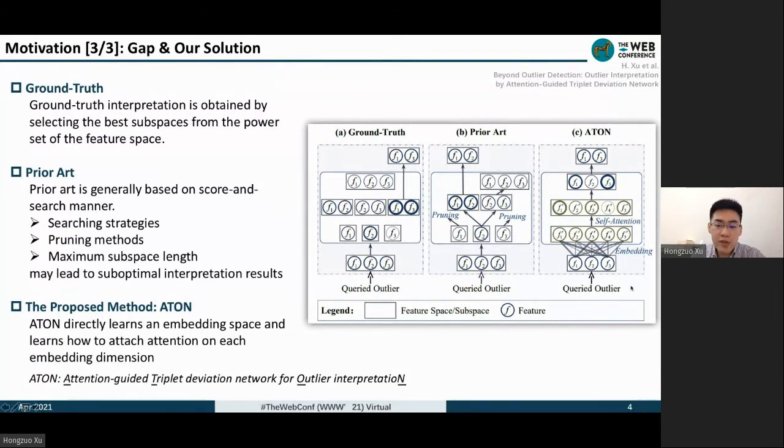Compared with conventional subspace searching-based approaches, the ATON method can directly learn an embedding space and learn how to attach attention to these new dimensions by using a self-attention learning model.